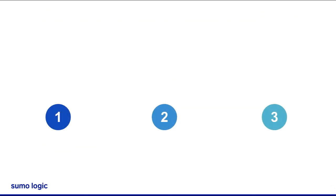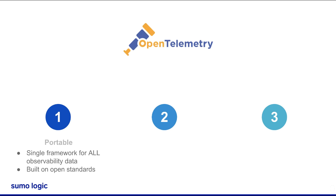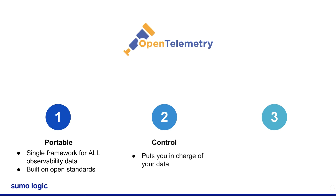From the infrastructure to the application to your end users, OpenTelemetry gives you comprehensive visibility into the health and performance of every layer. It's portable — you no longer have to leverage proprietary agents or a complicated set of multiple tools to really achieve observability. It gives you control: OpenTelemetry lets you build robust pipelines to have complete control over the data collected, any transformations to it, and where it should be delivered.